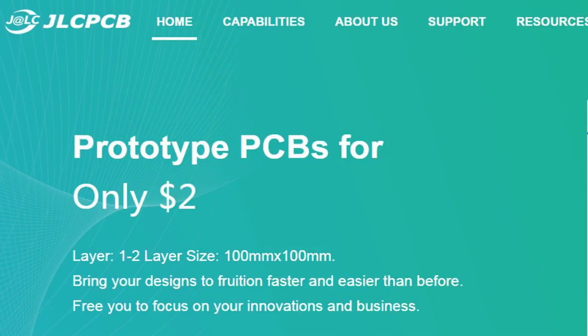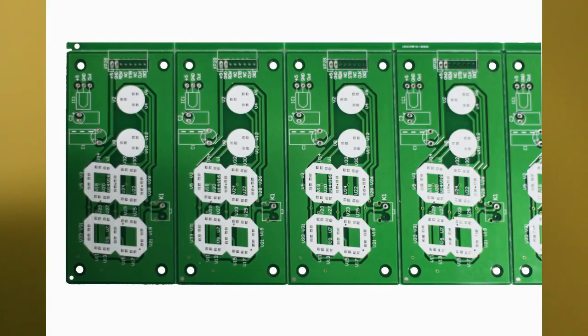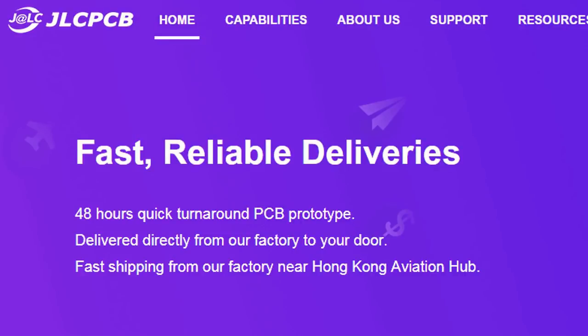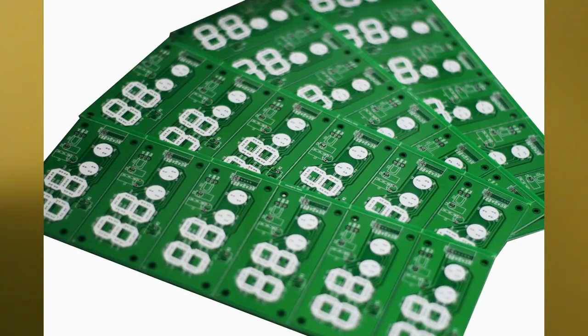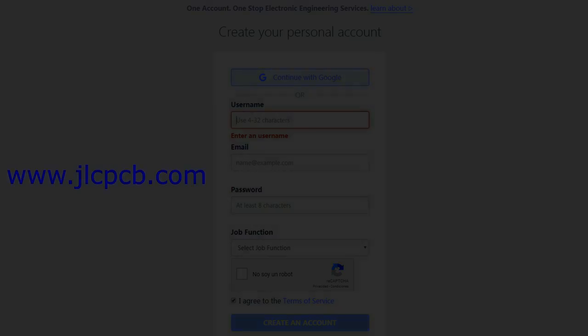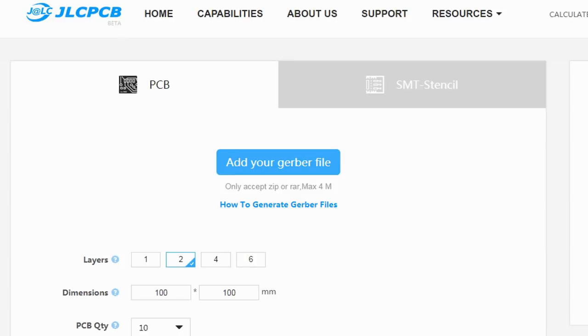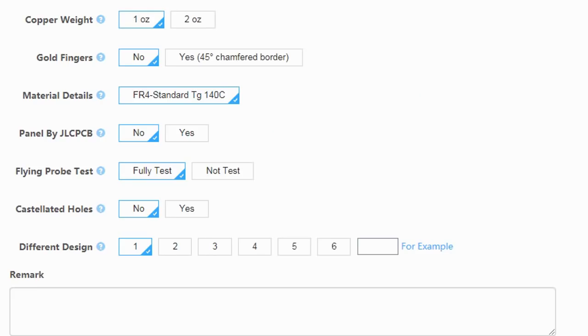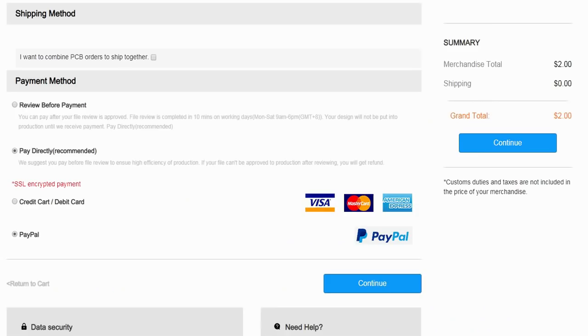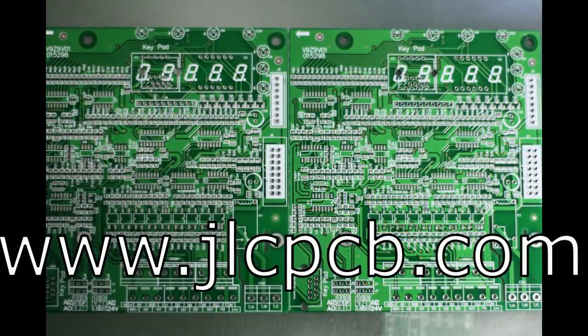This video is sponsored by JLCPCB. JLCPCB is a company that makes excellent quality PCBs at an unbeatable price. You can order boards online in minutes. After registration, upload your Gerber files, select the PCB properties, select the payment method and place your order. Best price and quality for all your PCB needs.